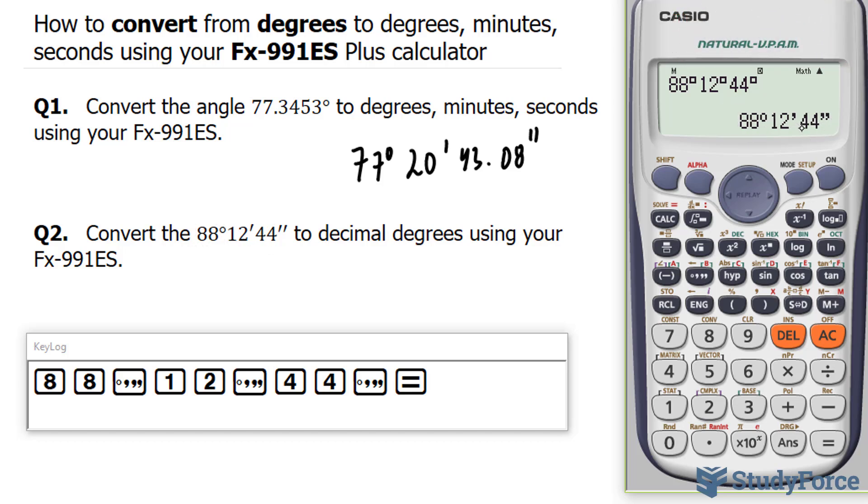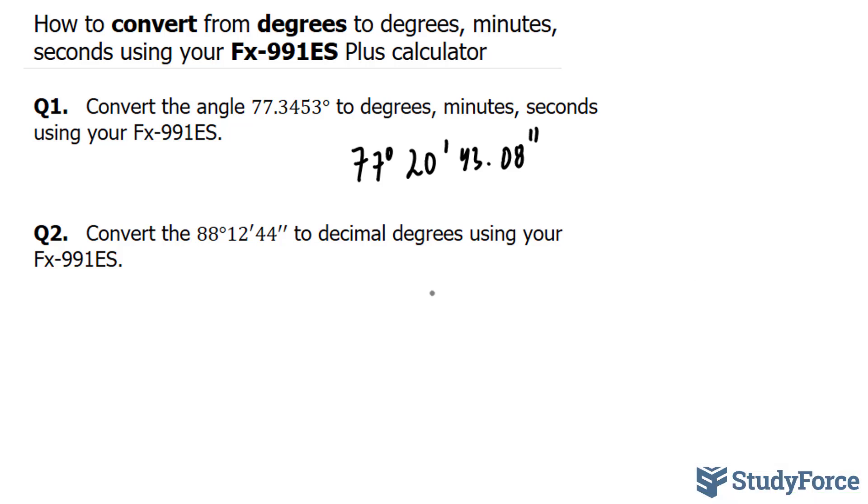Now, to go from this to decimal degrees, all you do is click this button, and you end up with 88.2122222 repeating. So let's write that down. 88.212222 repeating.